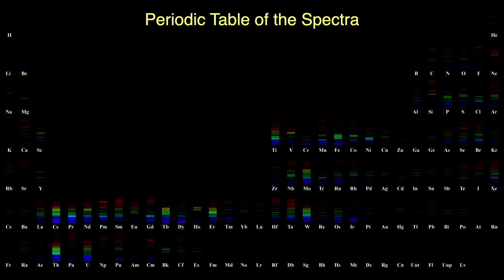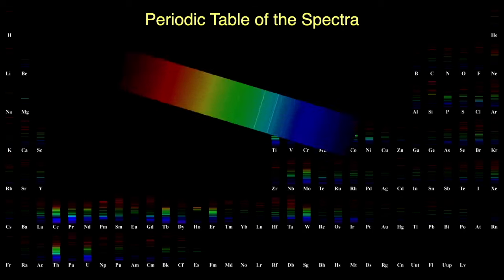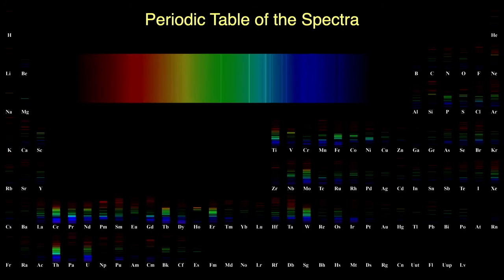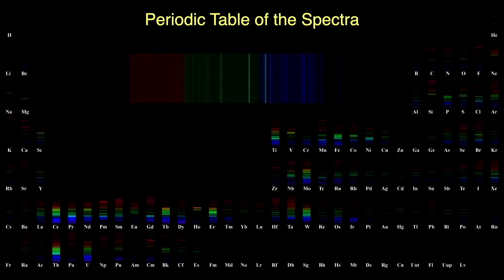Here's the periodic table of the spectra. Tungsten has a moderately complex set of emission lines, mostly in the green through violet part of the spectrum. If I increase the contrast, you can see this more plainly. These emission colors uniquely identify it as tungsten — no other element gives off this exact set of colors.